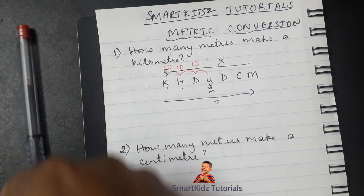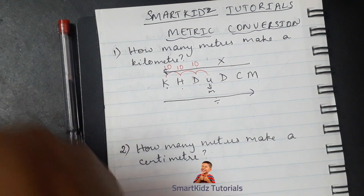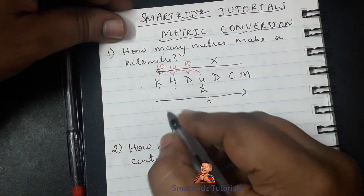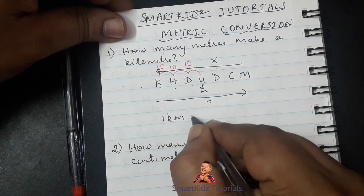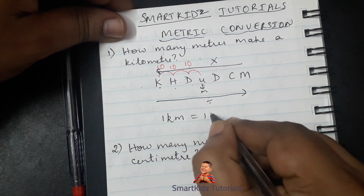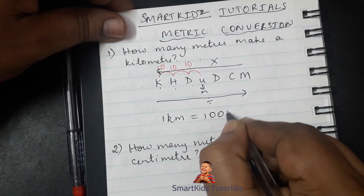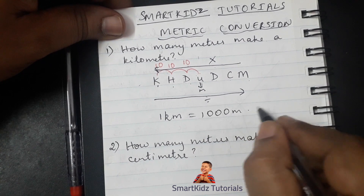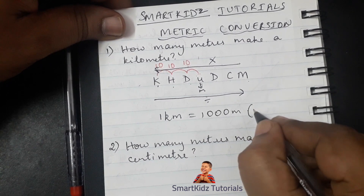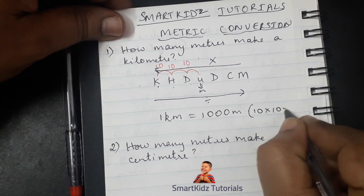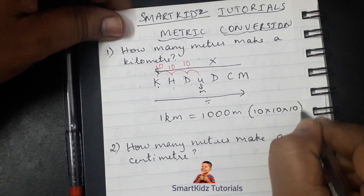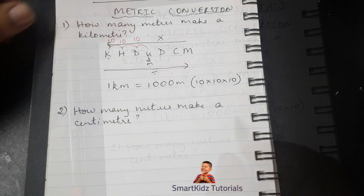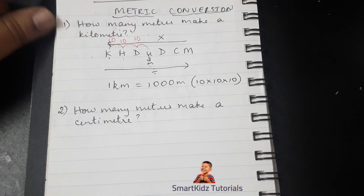So this would be 10 multiplied by 10 multiplied by another 10. If we combine the three zeros, we get 1000. That means one kilometer is equal to 1000 meters, because 1000 meters comes from 10 × 10 × 10.